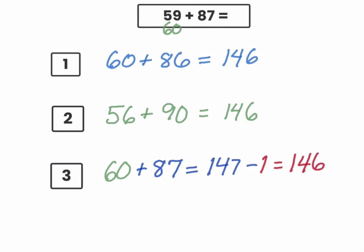So when using compensation, you can add a little bit to one number or a little bit to the other number, or change one of the numbers in a way and then change it back.